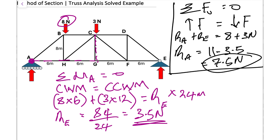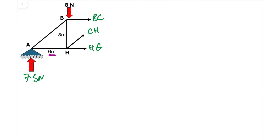Now let's find the internal forces for BC, CH, and HG using the method of sections. The first step is to draw an imaginary cut through those three members. We then isolate either the left or right side of that cut — we'll get the same answer either way. I'm going to isolate to the left and analyze that portion.